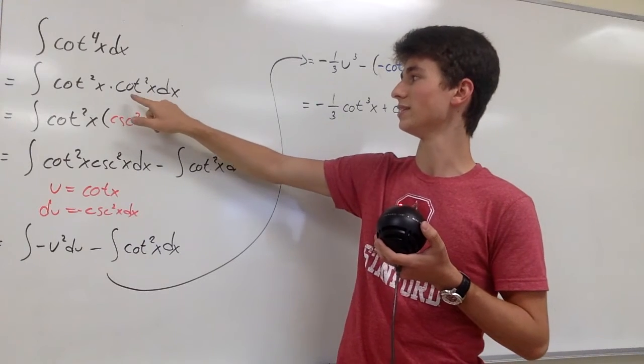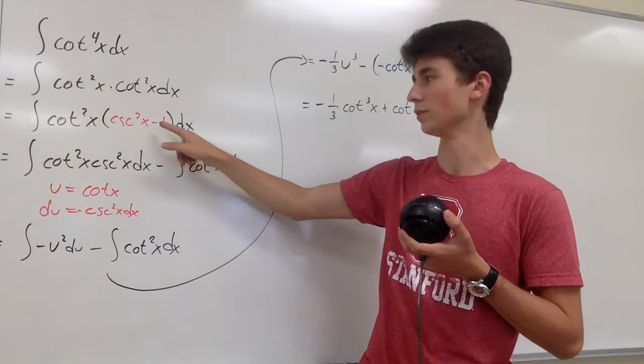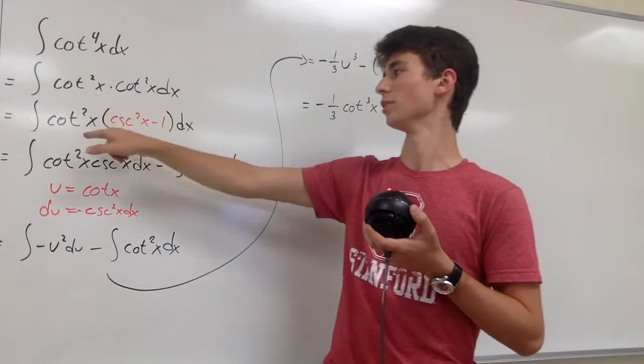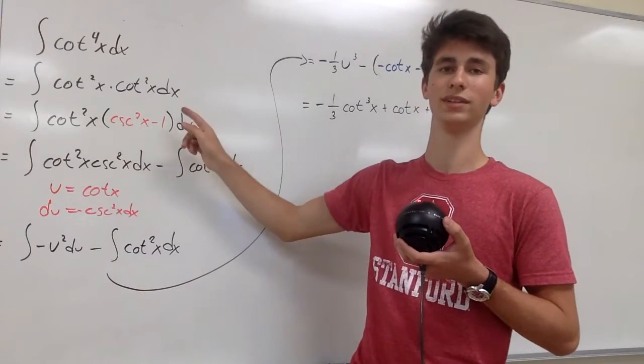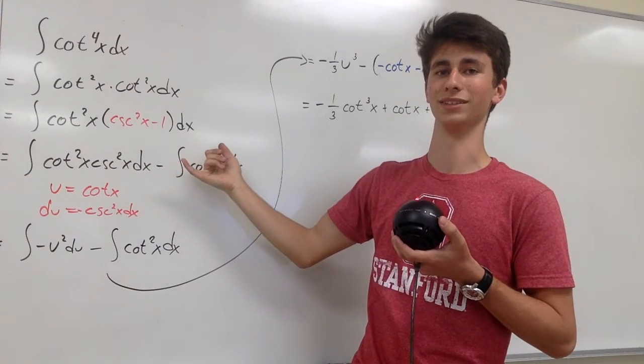And then we're going to use the identity that cotangent squared of x is equal to cosecant squared of x minus 1. And we're only going to do it for one of them, because if you do it for both, you would have to foil it out, and then you would get a cosecant to the fourth of x, which we can't really integrate right now.